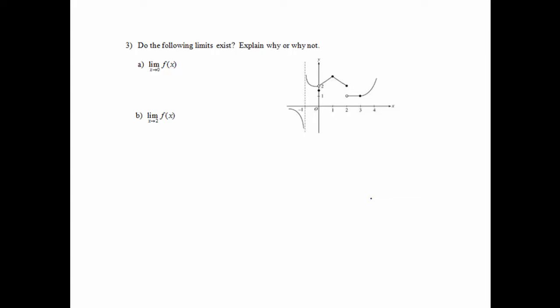Number 3, do the following limits exist? Explain why or why not. So way back to chapter 1, I believe, for this one. Remember, for a limit to exist, the limit from the left has to equal the limit from the right. So I'm going to write the limit as x approaches c from the left must equal the limit as x approaches c from the right. We really don't care what's happening at that point.